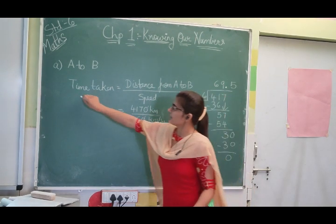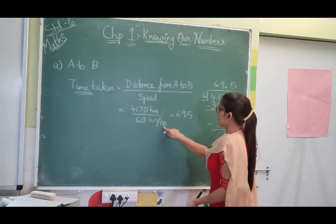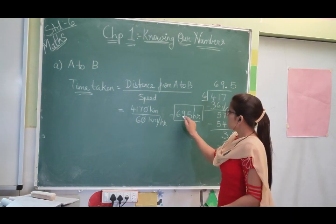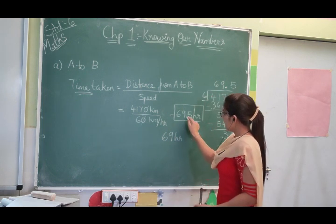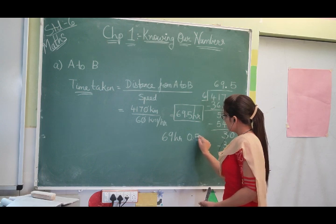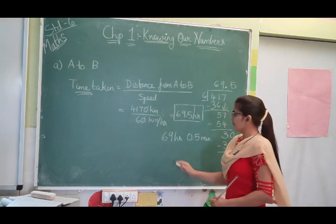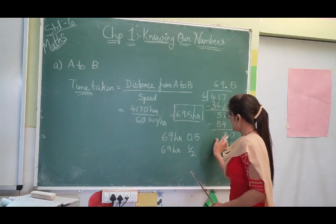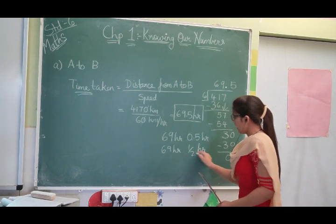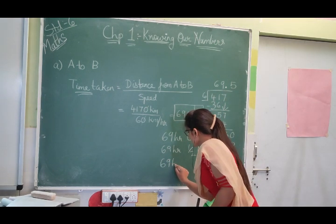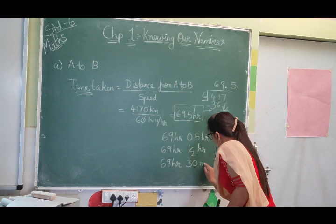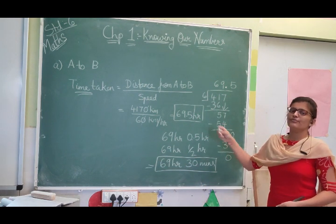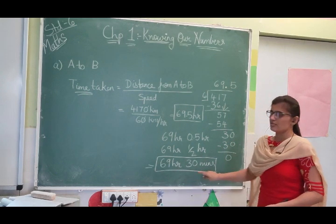Our answer is 69.5. Since we need time, the unit is hours. If we want to convert to hours and minutes: 69 is the hours, and 0.5 hours means half an hour, which equals 30 minutes. So the final answer is 69 hours and 30 minutes. Both forms — 69.5 hours or 69 hours 30 minutes — are acceptable as the answer.